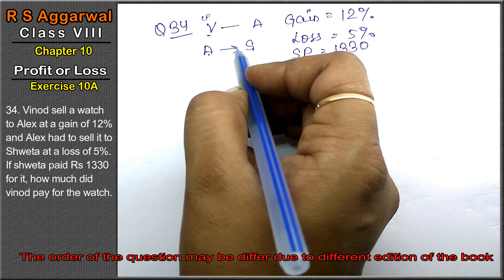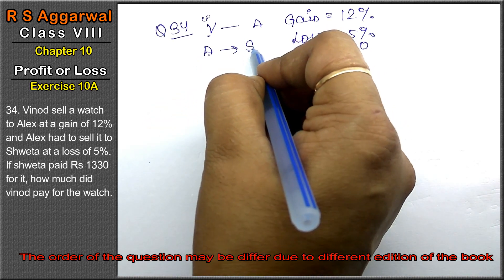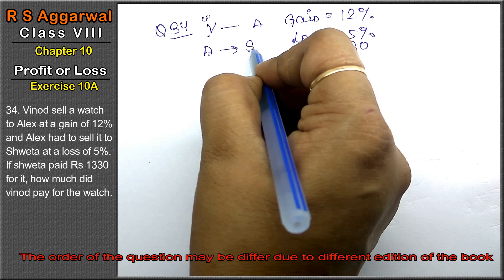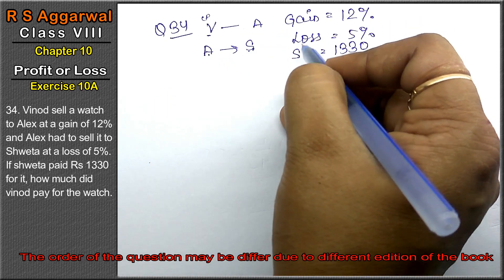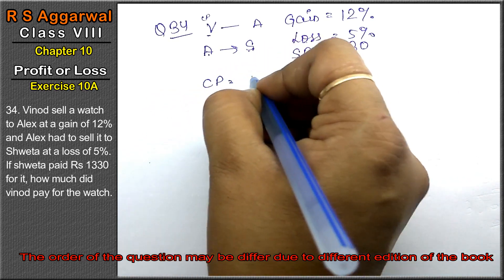How much did Vinod pay? So our question works backwards. The SP that Shweta purchased at, her CP, was Alex's SP with a loss percentage. So we'll find the CP. What is CP?